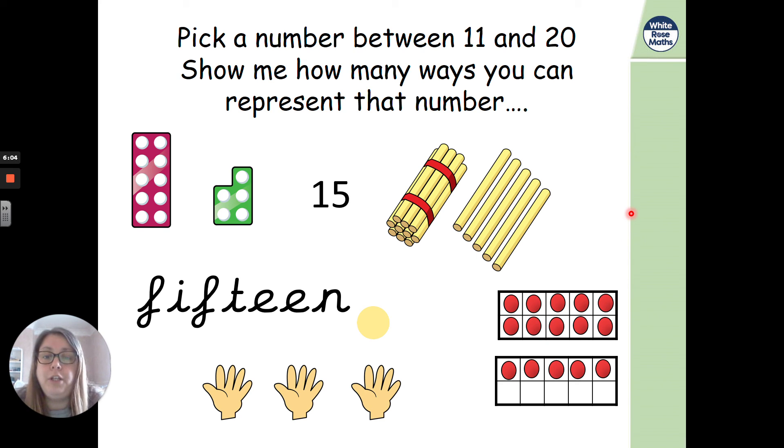So what I want you to do now is I want you to pick a number between 11 and 20 and show me how many ways you can represent that number. So I've chosen number 15 and I've written it there as a number and I've also written the word. But then what I've done is I've drawn some numicon, I've drawn some sticks. So remember I've got my bundle of 10 and then 5. I've drawn some fingers, I've drawn 15 fingers and then I've drawn it on my 10s frame.